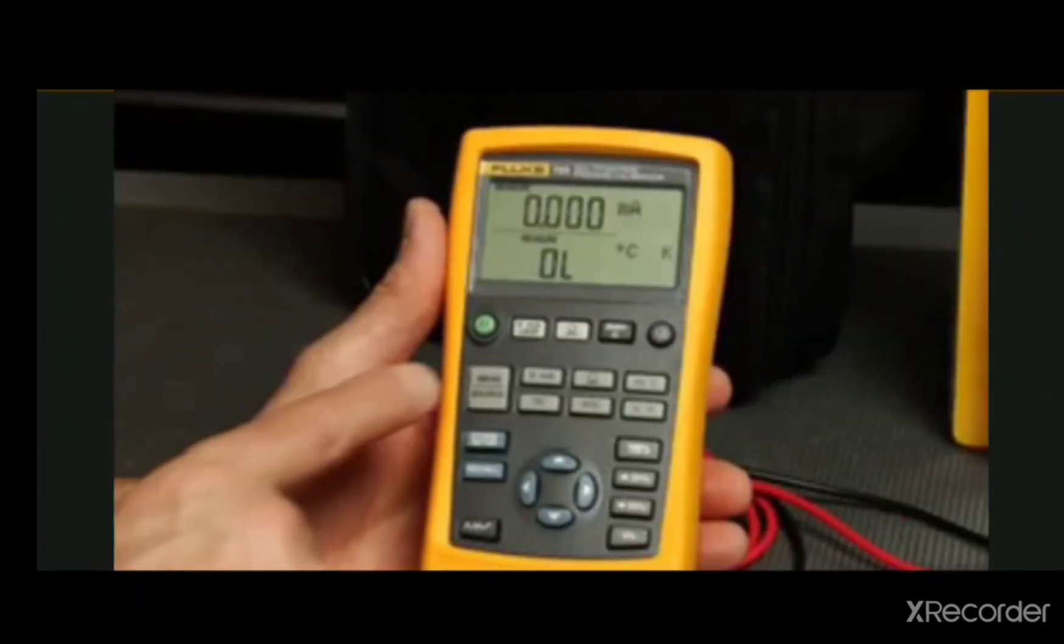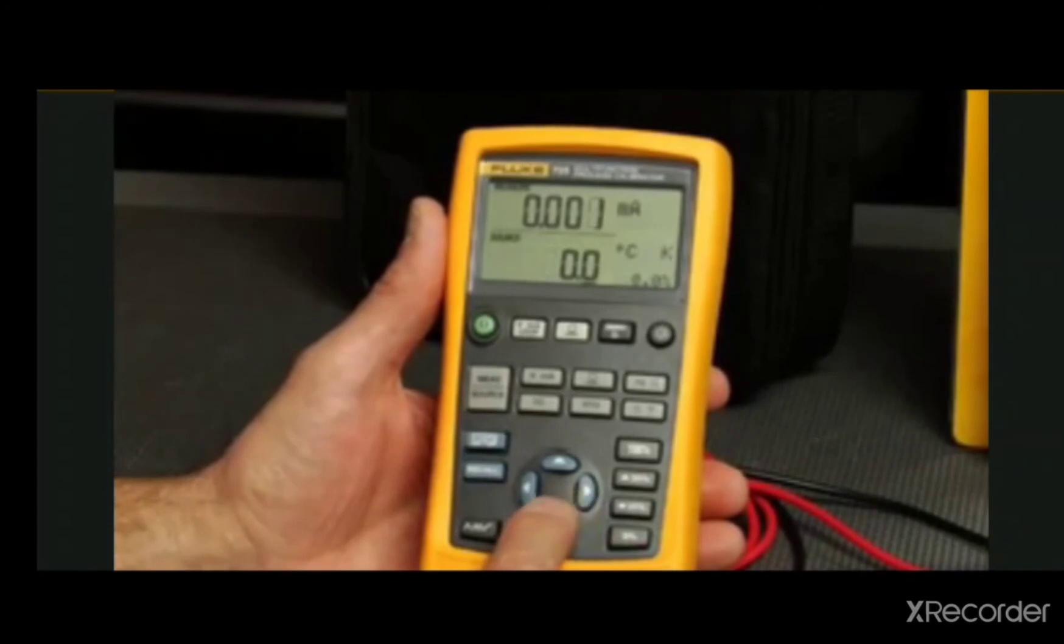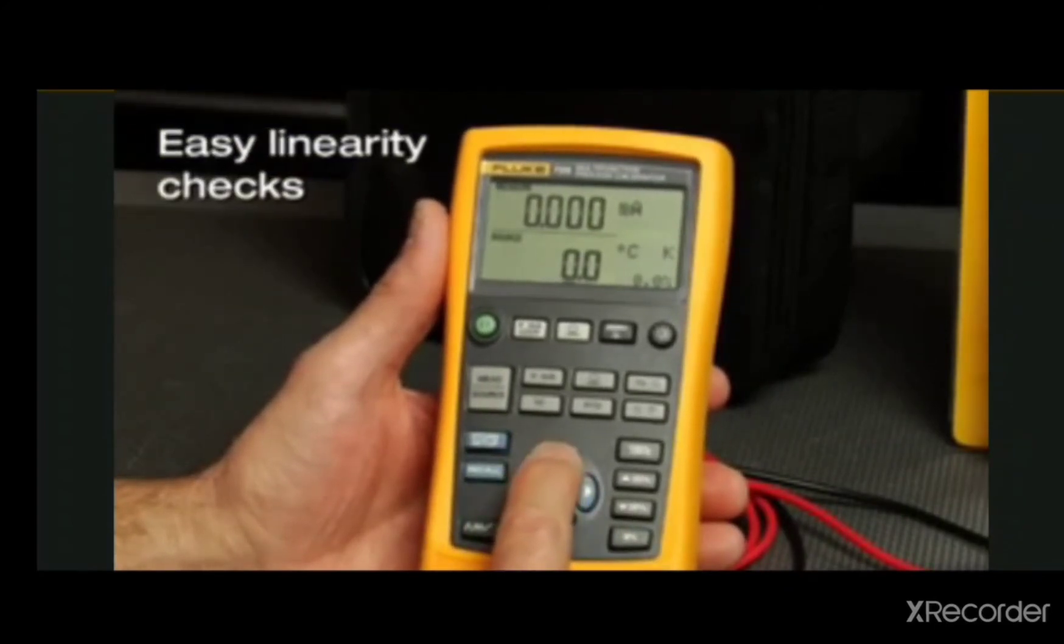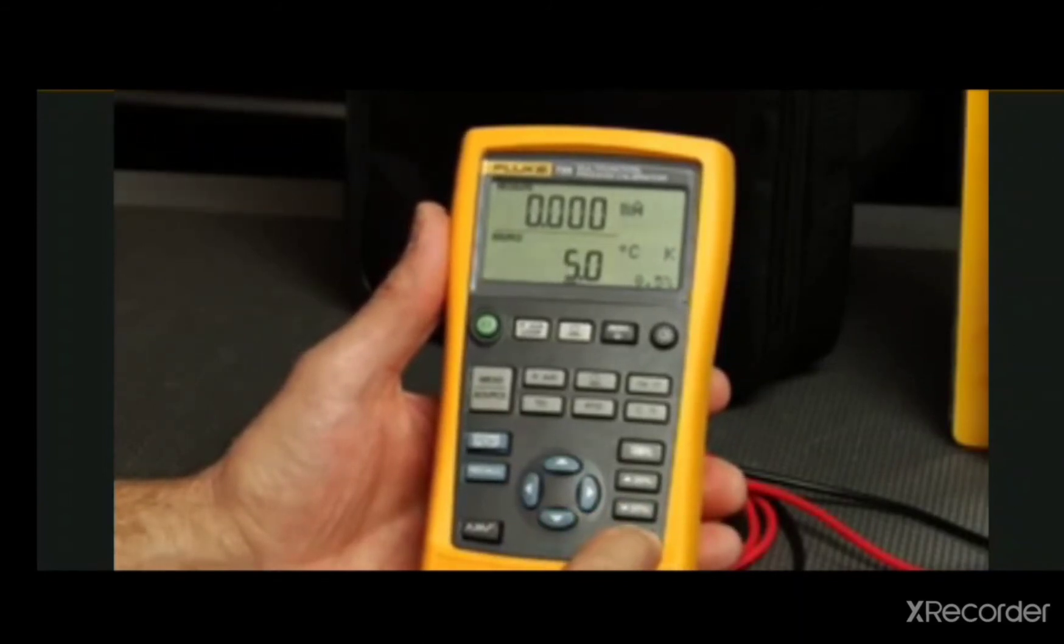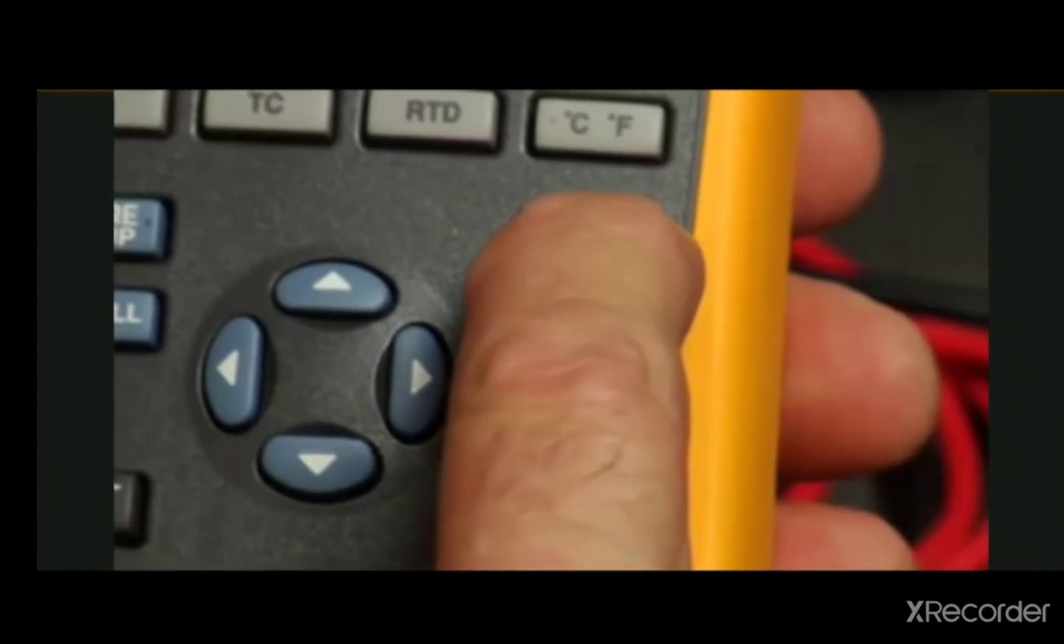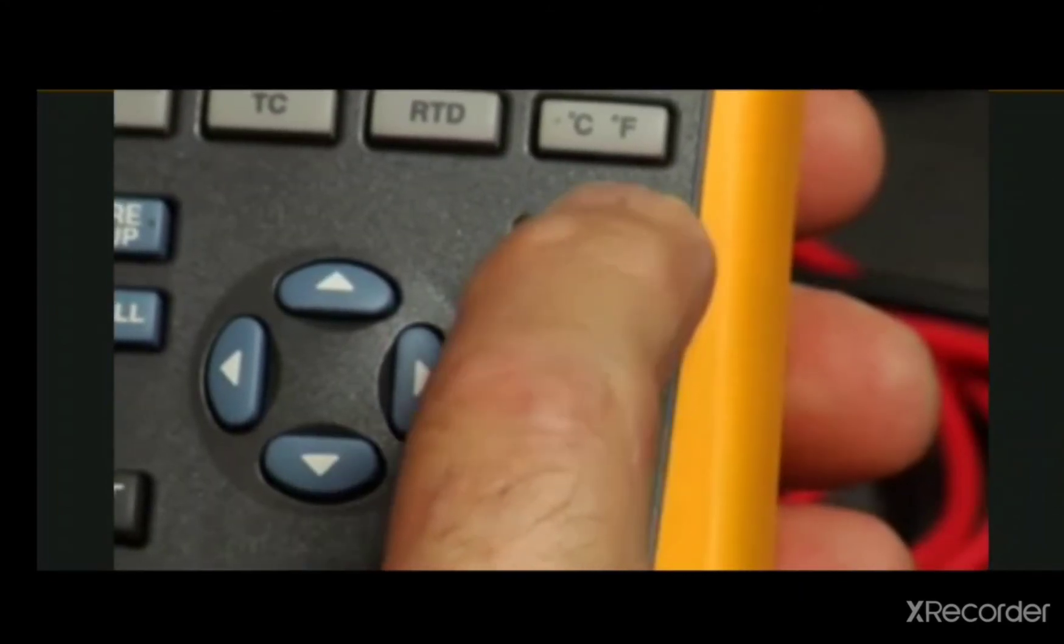You can set the 725 up with zero and span settings to coincide with the transmitter you are testing for easy linearity checks. To do so, first set the calibrator to source the desired 0% output value, then press and hold the 0% button until the display flashes. Set the source then to the desired span value, press and hold the 100% button until the display flashes again.